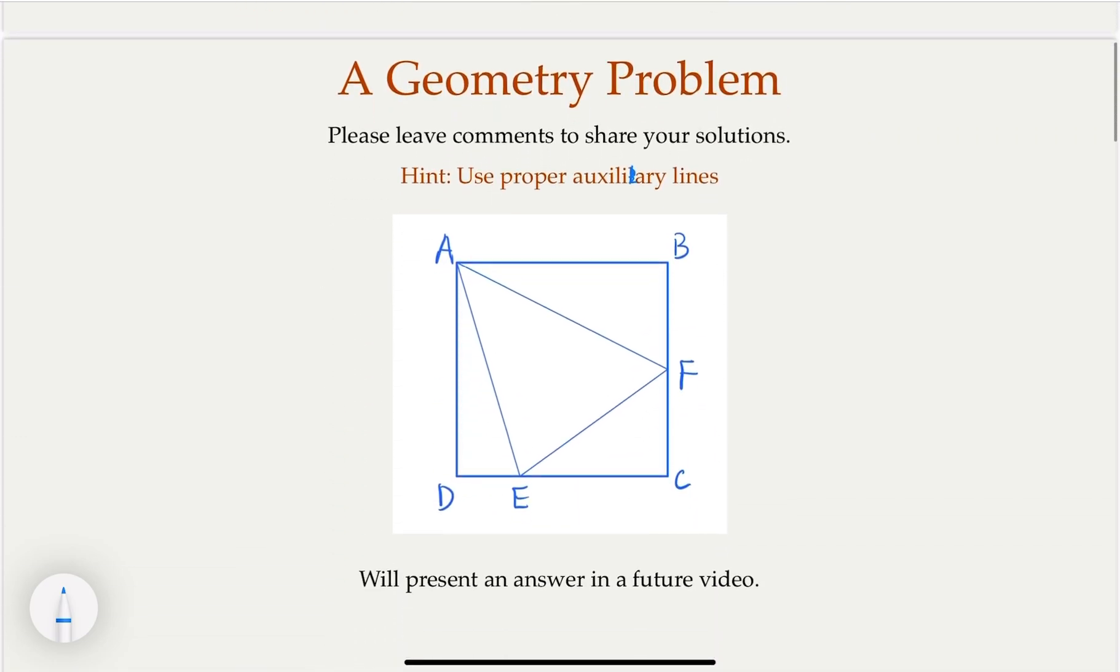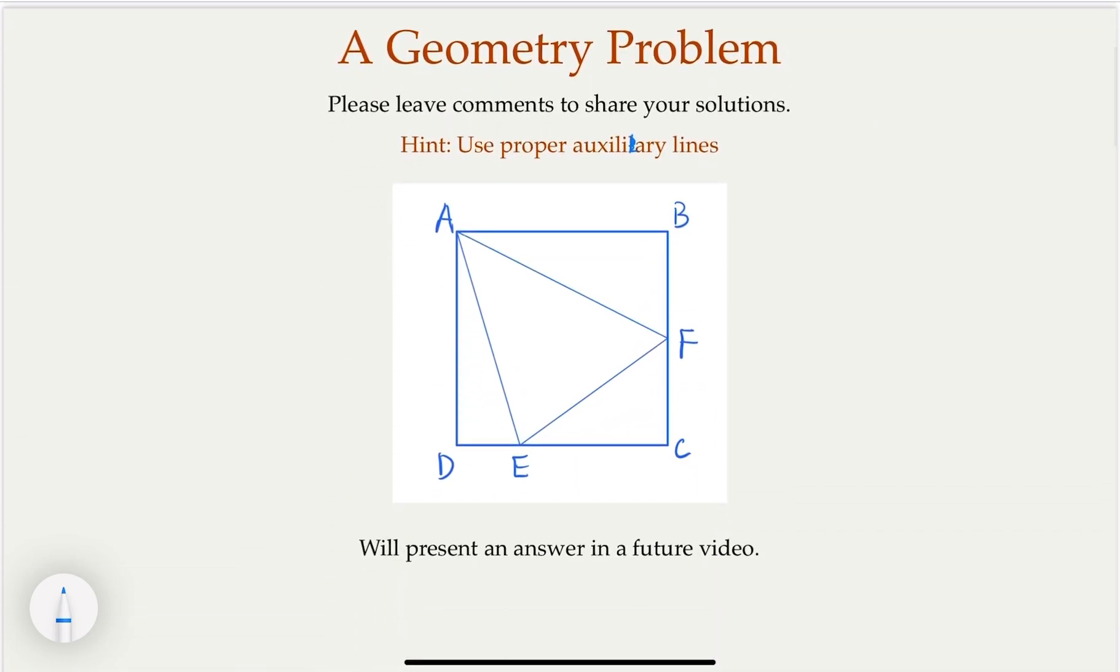Again, this is a geometry problem, you should have a geometry solution. However, we are not going to do that today. Welcome to leave comments below to show and share your solution. A hint here is that you probably want to use some auxiliary lines and come up with maybe congruent triangles so that you may be able to prove this line segment add up to EF.